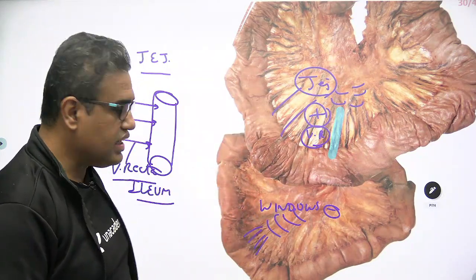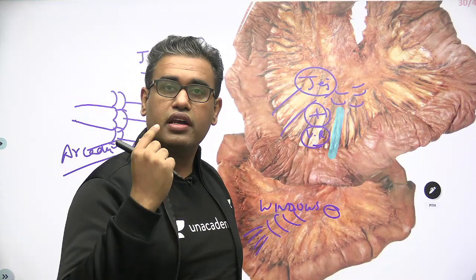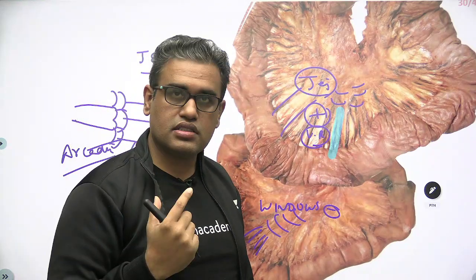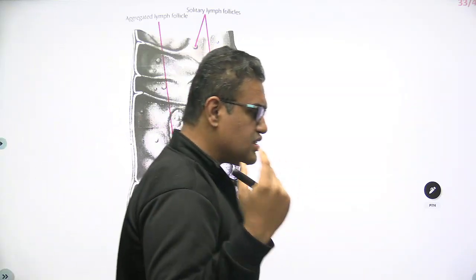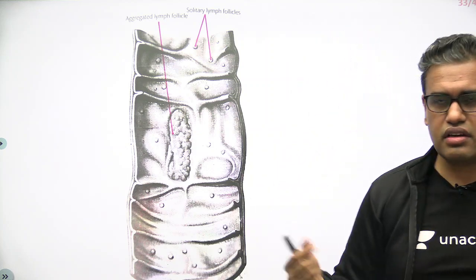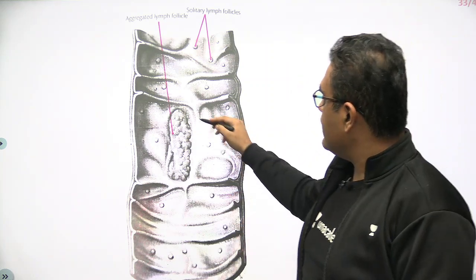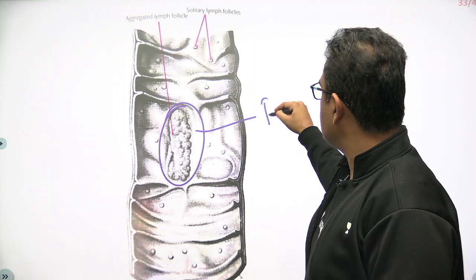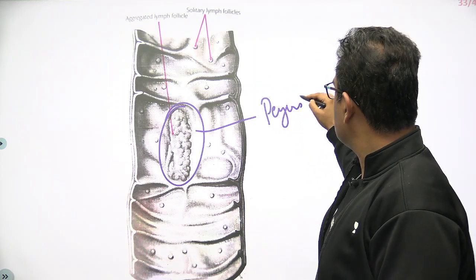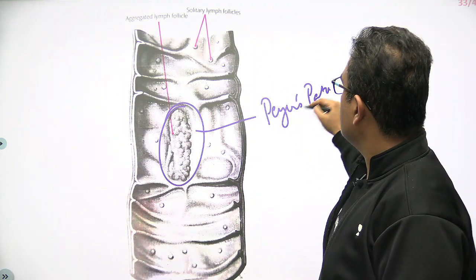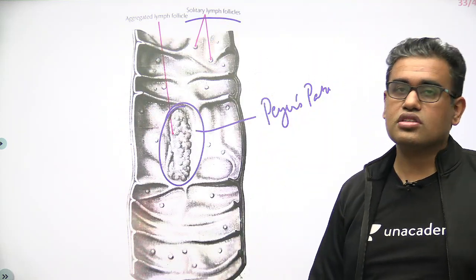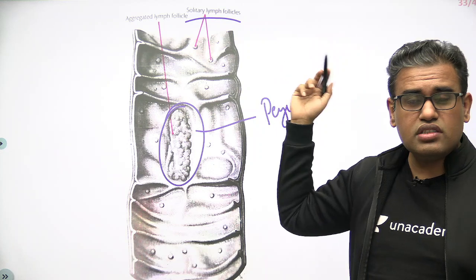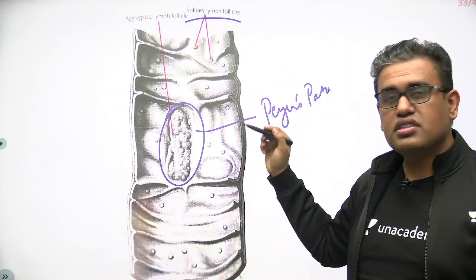Apart from this, in the Ileum you will find aggregated lymphoid follicles known as Peyer's patches. You can also see them in histological images. Peyer's patches are aggregated lymphoid follicles and are a feature of Ileum. Solitary lymph follicles are present everywhere — even in duodenum, jejunum, and colon — but Peyer's patches are specifically a feature of the Ileum.